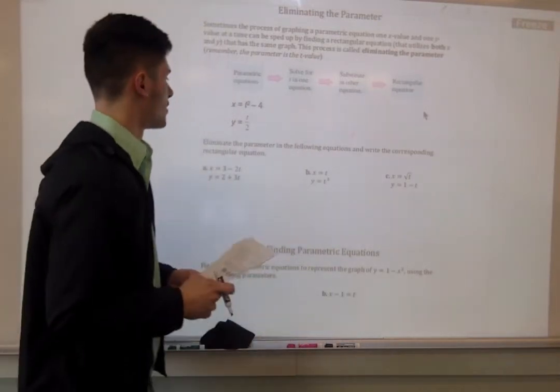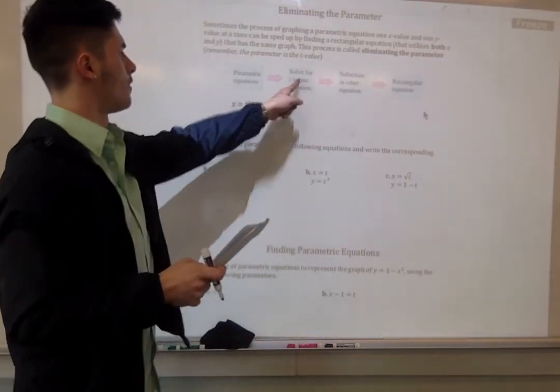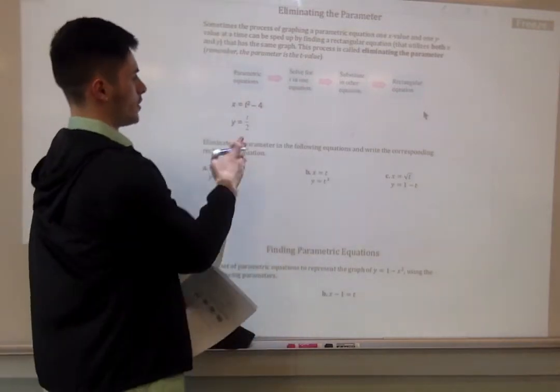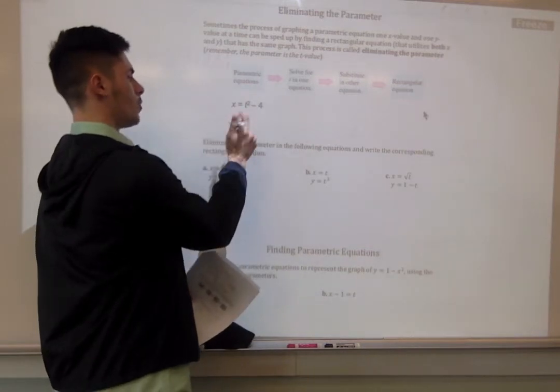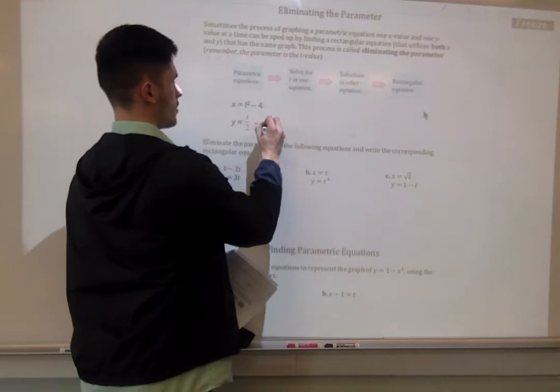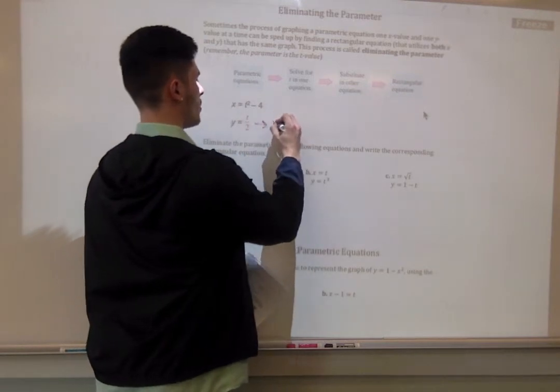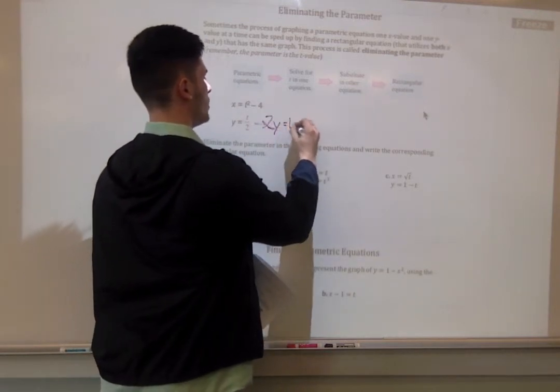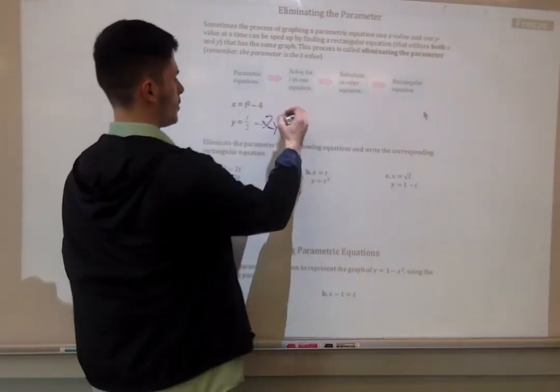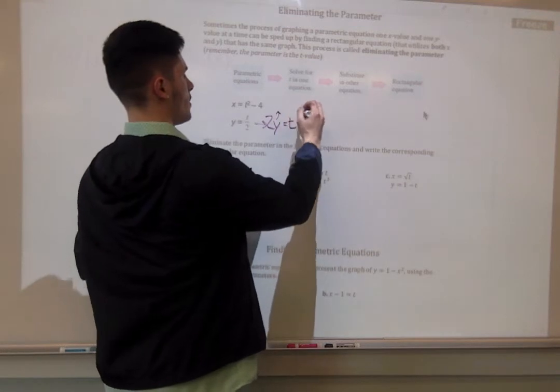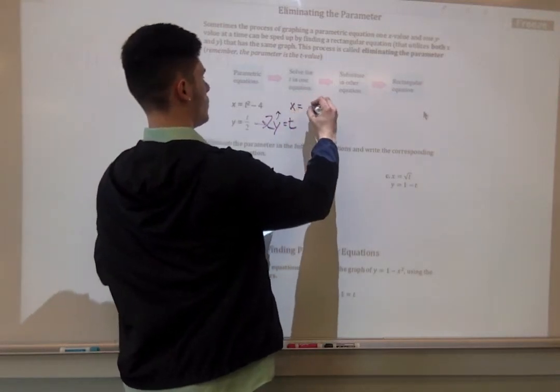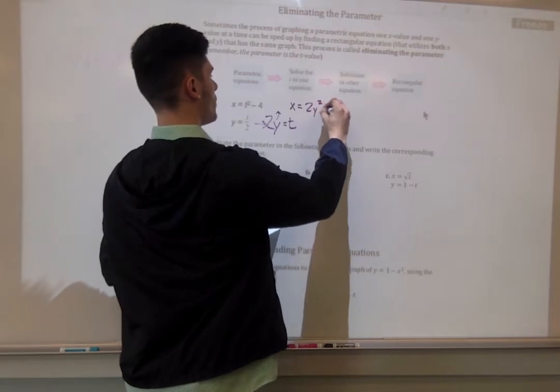Let's go ahead and try this out. We're going to solve for t in one equation. Solving for a variable means you're isolating that one. Let's go ahead and isolate t in the y equation, because it would be very simple. This turns into 2y equals t. Then our next step is to substitute in the other equation. We'll plug this in here. So, we get x equals 2y squared minus 4.